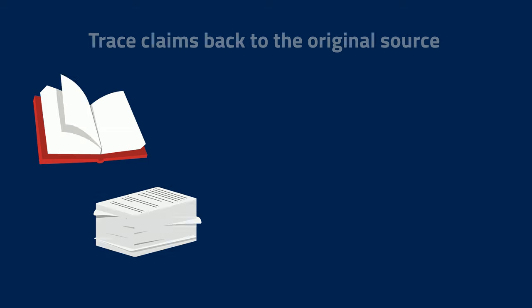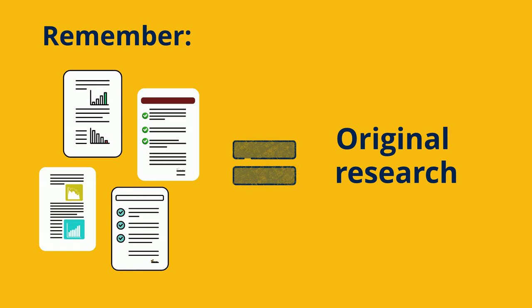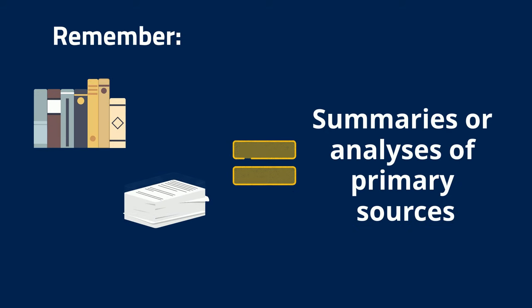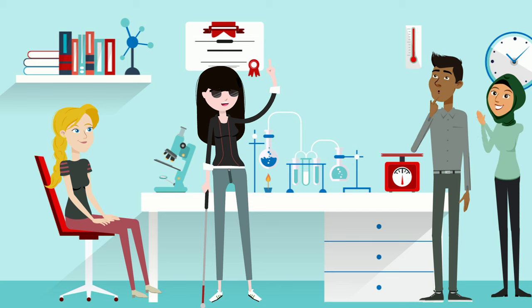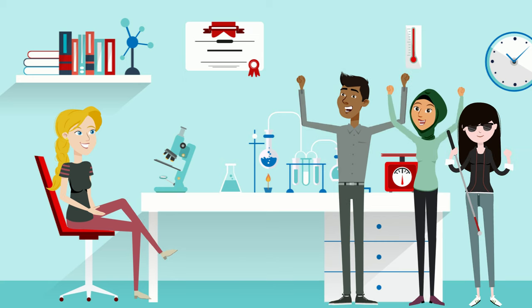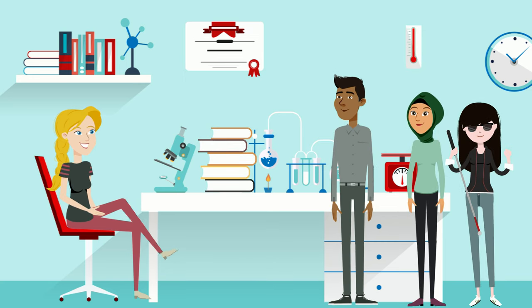This is why, especially for in-depth research, it's always good to trace information back to primary sources when possible. To wrap up: primary sources equals original research; secondary sources equals summaries or analyses of primary sources. Peer review helps ensure the quality of both — we'll talk more about that in the next video. And there you have it! You're now equipped to navigate the world of scientific literature like a pro. Happy researching, everyone!